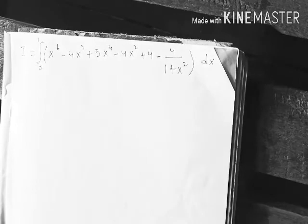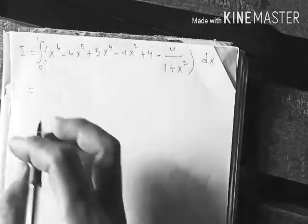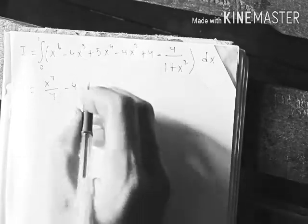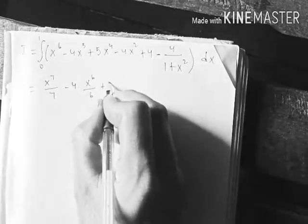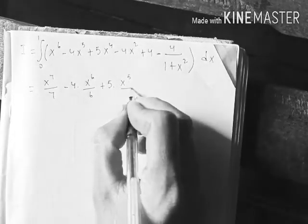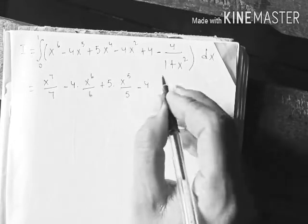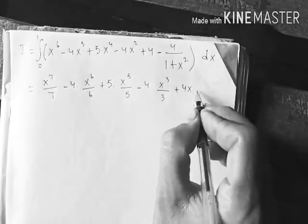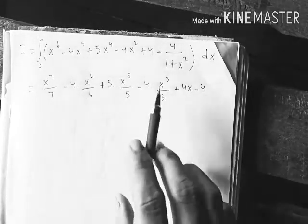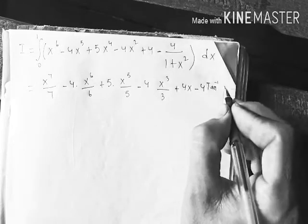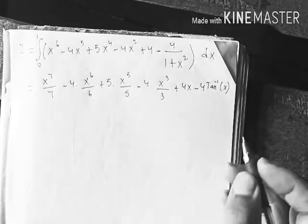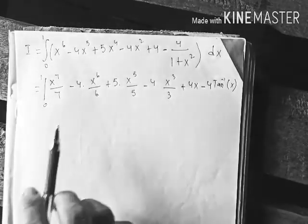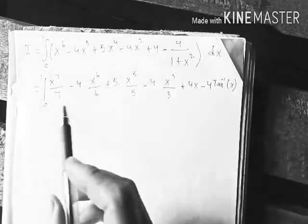Now we integrate term by term. The integral of x⁶ is x⁷/7, minus 4 times x⁶/6, plus x⁵/5, minus 4 times x³/3, plus 4x, minus 4 times the inverse tangent of x. We evaluate this from 0 to 1.